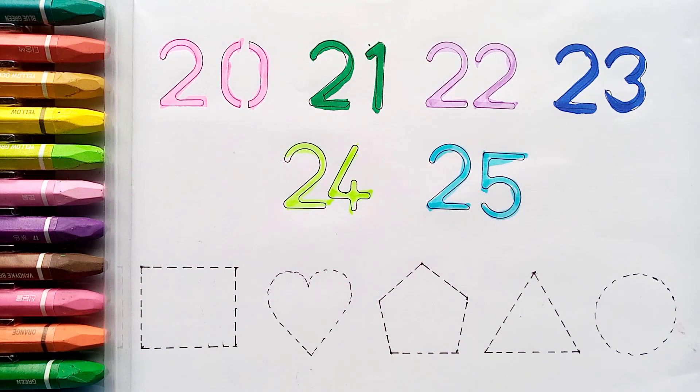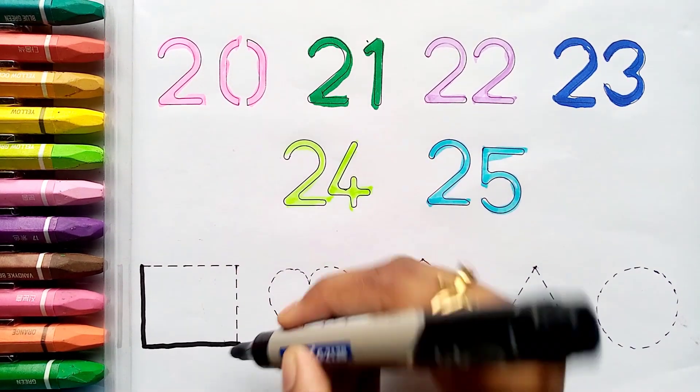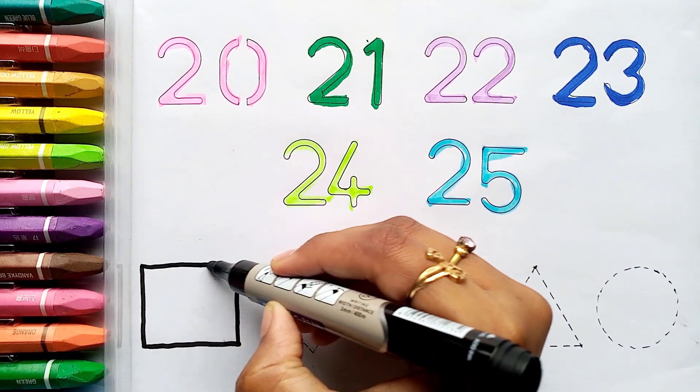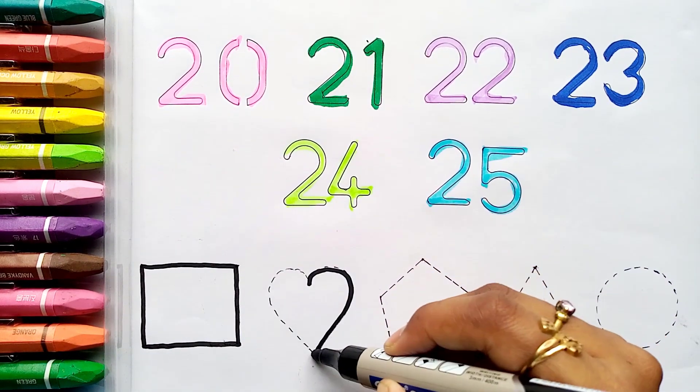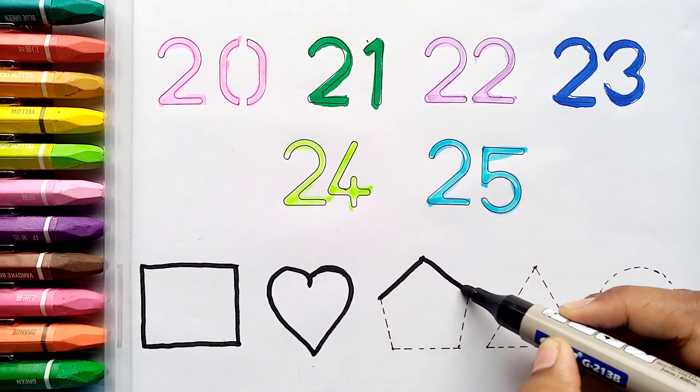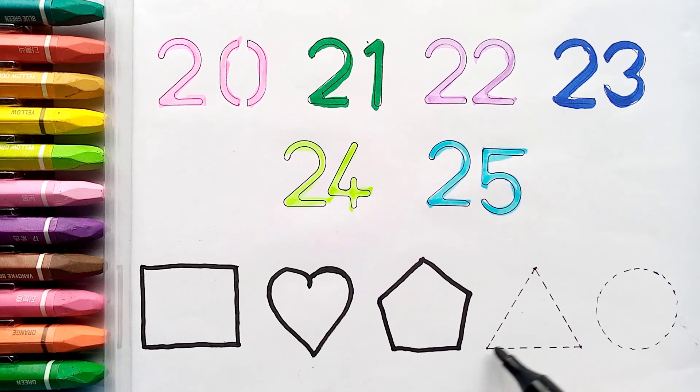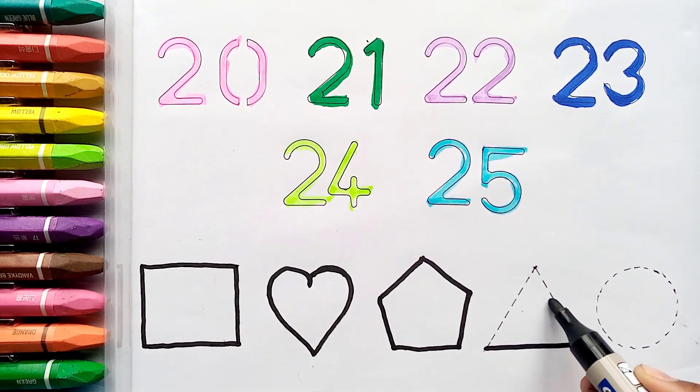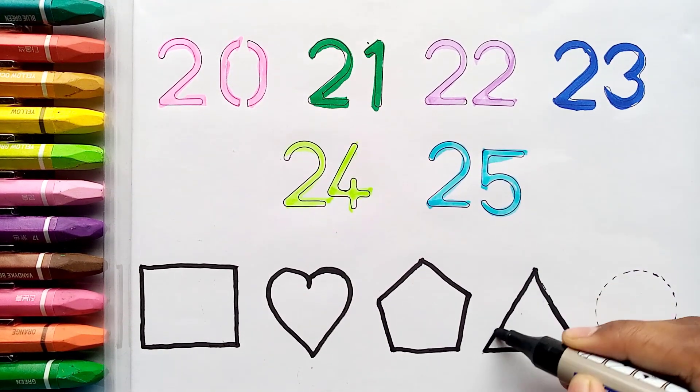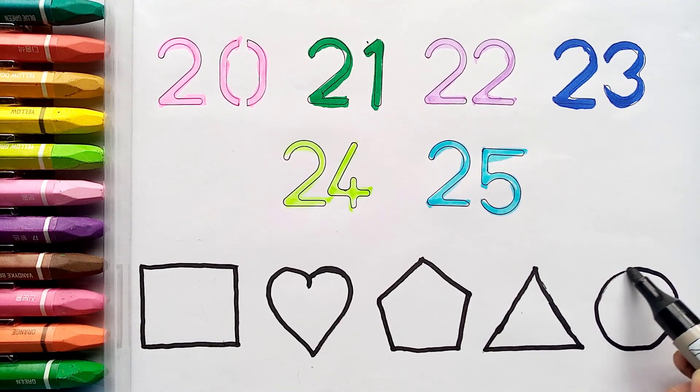Let's draw some shapes. Square. Heart. Pentagon. Triangle. Circle.